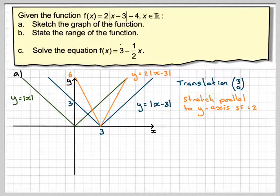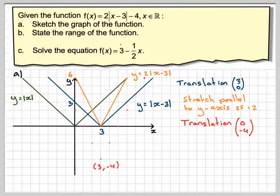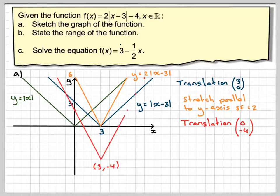And finally what we've got to do is take 4. So, that means we're going to need to translate this graph by translation 0 minus 4. So, everything moves down 4 units. So, that will look like this. And here we get the graph that we wanted.